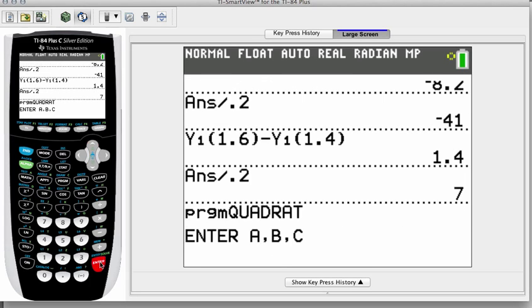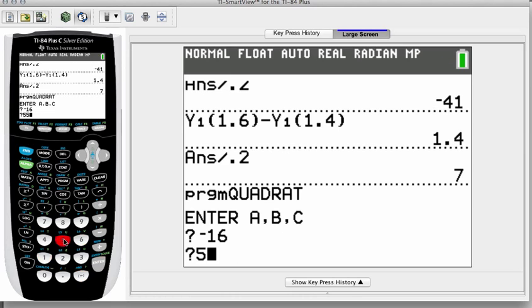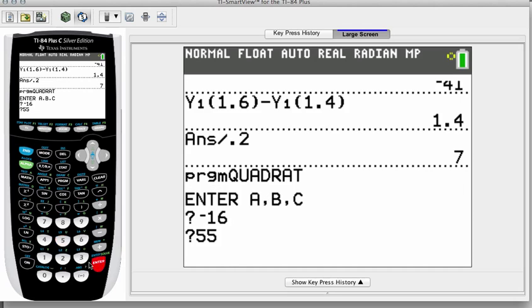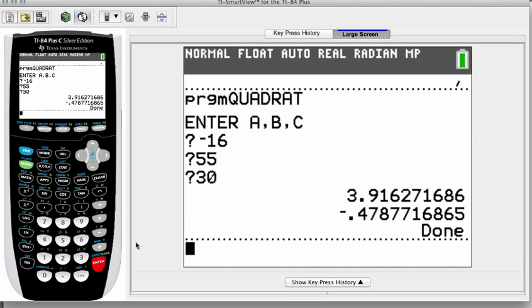So when you run the program, it's going to ask you for the coefficients, assuming of course your quadratic is of the form ax squared plus bx plus c. So in this case a, which is the first question mark, is negative 16. B is 55. You just enter them in order. C is 30. Hit enter. And of course we can't have a negative time. So the positive one, 3.916, is how long it takes for the ball to hit the ground.